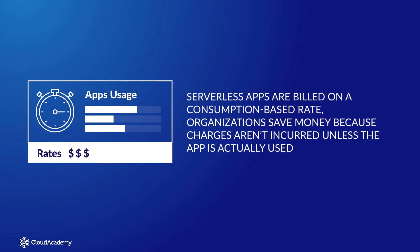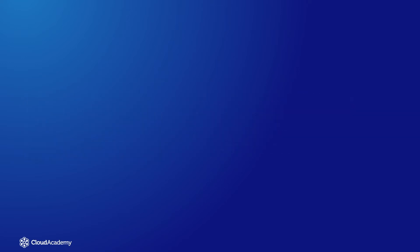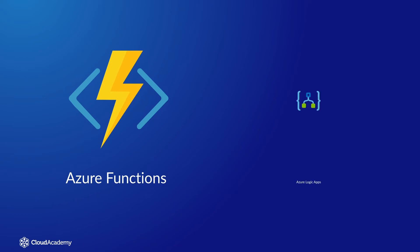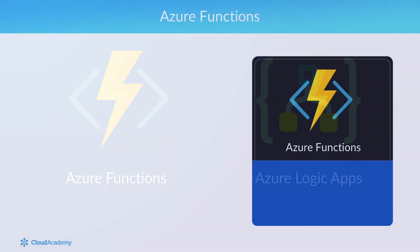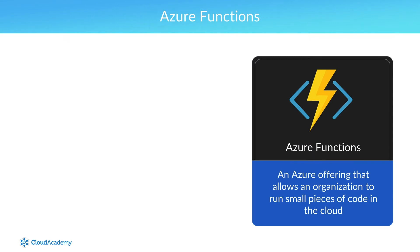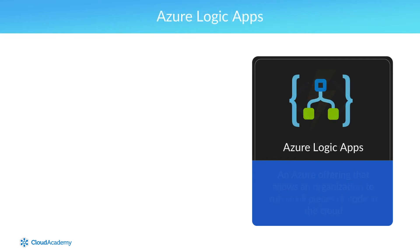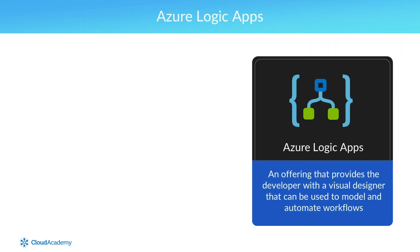There are two core services that form the foundation of serverless in Azure: Azure Functions and Azure Logic Apps. The intent of both is to allow developers to build applications with minimal code requirements. Azure Functions is an Azure offering that allows an organization to run small pieces of code in the cloud, referred to as functions. Azure Logic Apps is an offering that provides the developer with a visual designer that can be used to model and automate workflows.